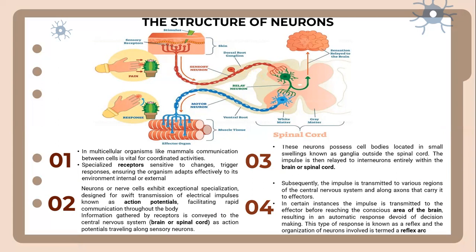This facilitates rapid communication throughout the body. The information gathered by the receptor is conveyed to the central nervous system — the brain or spinal cord — via action potentials traveling along sensory neurons. This neuron has its cell body located in a small swelling known as a ganglion, outside the spinal cord. The impulse is then relayed to the interneuron, entirely within the brain and spinal cord.